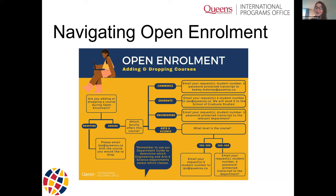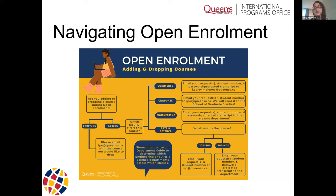If you want to request an Arts and Science course, we're happy about that. Ask yourself what level the course is. If it's a 100 or 200 level, you can send your name, student number, and course request to ipo.queensu.ca — we in the office can review and enroll you. If the course is a 300 or 400 level, it's more advanced, so you would need to send your course request, your password-protected transcript, and your student number to the relevant department. We'll send you a list with all relevant names and email addresses for Arts and Science contacts, and remember to use our department guide to determine which departments assess which classes.